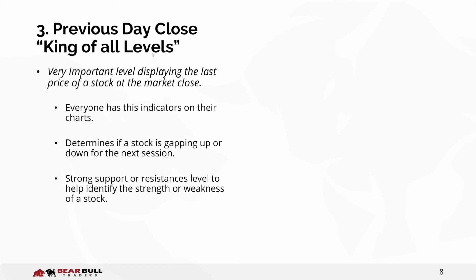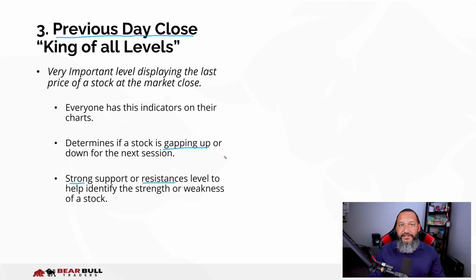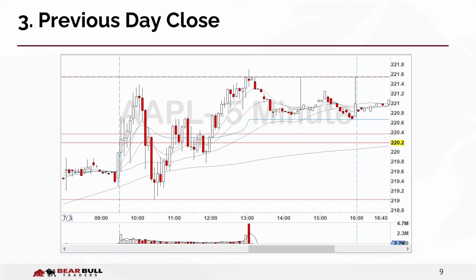The previous day close is probably one of the most important levels there is — we call it the king of all levels in our community. Almost every single trader watches this indicator. It helps you calculate whether a stock is gapping up or down for the next session, and it provides very strong support and resistance. If something is holding the previous day close, that can be a powerful support move. If it can't break above the previous day close, that can show great resistance, indicating the stock may be weaker and head even lower.